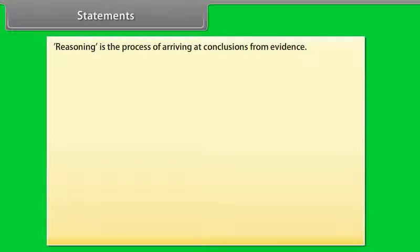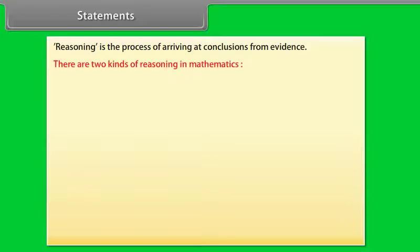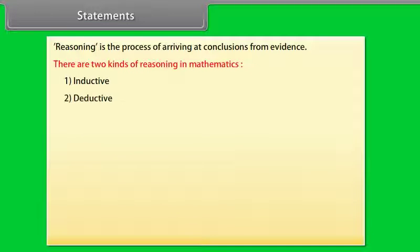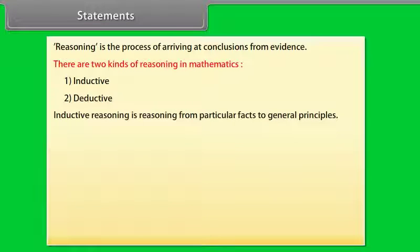Statements. Reasoning is the process of arriving at conclusions from evidence. There are two kinds of reasoning in mathematics: 1. Inductive, 2. Deductive. Inductive reasoning is reasoning from particular facts to general principles.